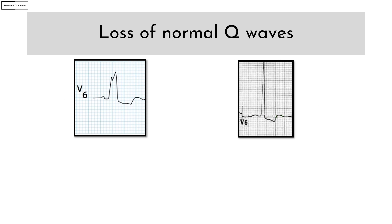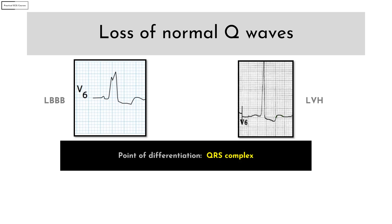Q waves should normally be seen in the lateral leads, especially in V5 and V6. Loss of normal Q waves has two important DDs: LBBB and LVH. The point of differentiation is the QRS complex. If the QRS is wide — that is 120 milliseconds or more — consider LBBB. If the QRS is tall, consider LVH.